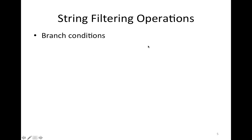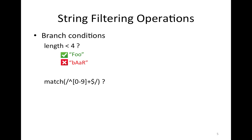The second type of string operations is string filtering operations. These are the constraints that you find in branch conditions. For example, there is the length constraint. The strings that satisfy this constraint are the strings that are of length three characters or less. So this string is going to satisfy this constraint, and this string is not. Notice that the filtering operations do not change the string — they either accept the string or reject it. This is another filtering operation that matches the input against a regular expression, so only the strings that contain digits will satisfy this constraint.